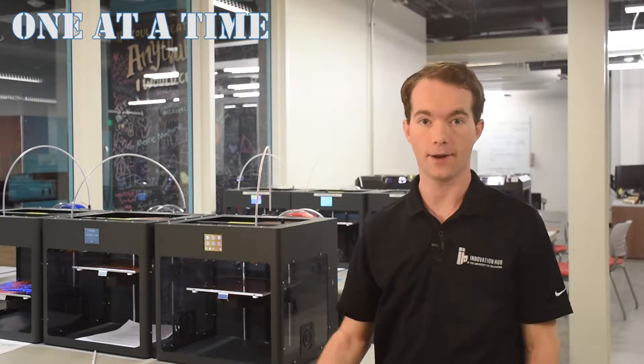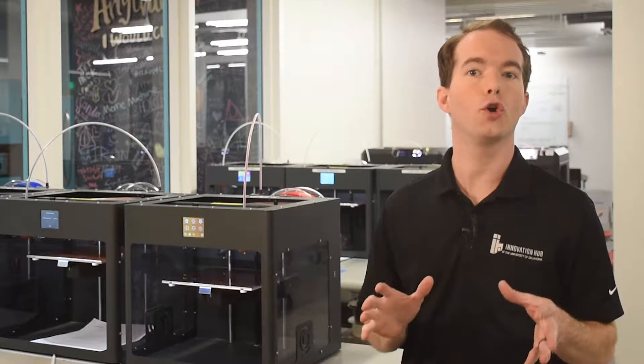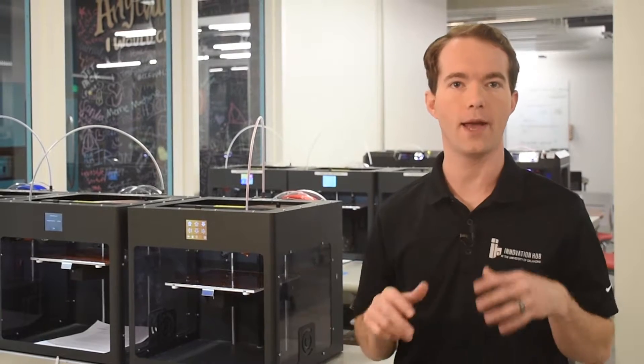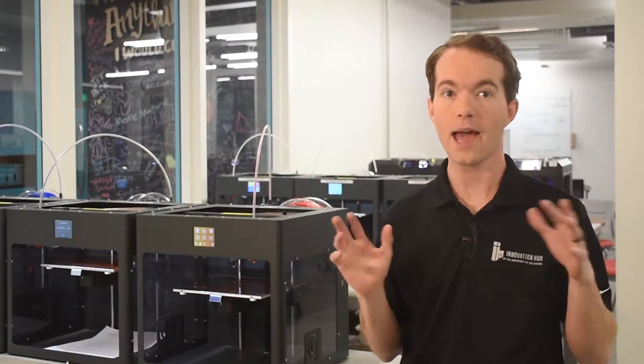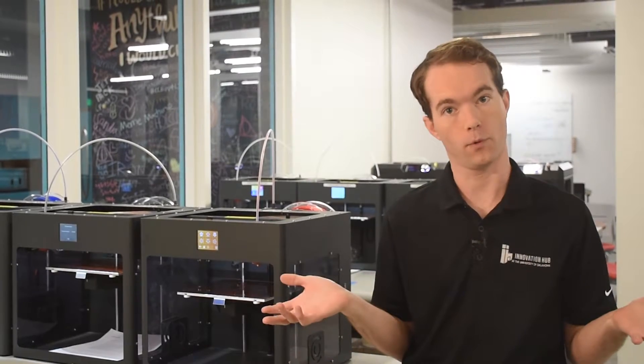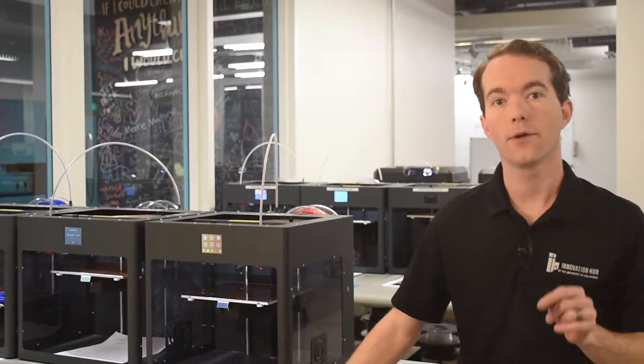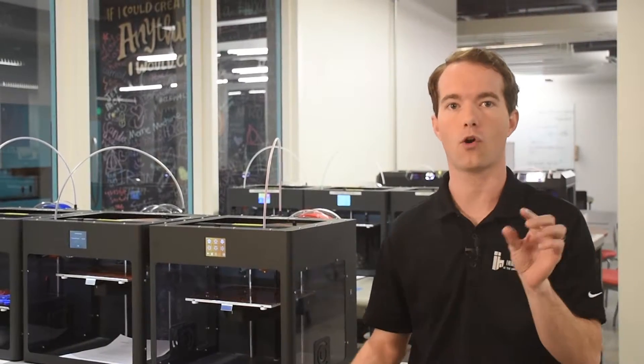In this episode, I'm going to talk about why we print one part at a time. It might seem like a good idea to shove as much as you can onto the print bed, right? It ought to be faster, right? And it's a more efficient use of space, right? Well, there are several reasons why it doesn't work out quite that way.